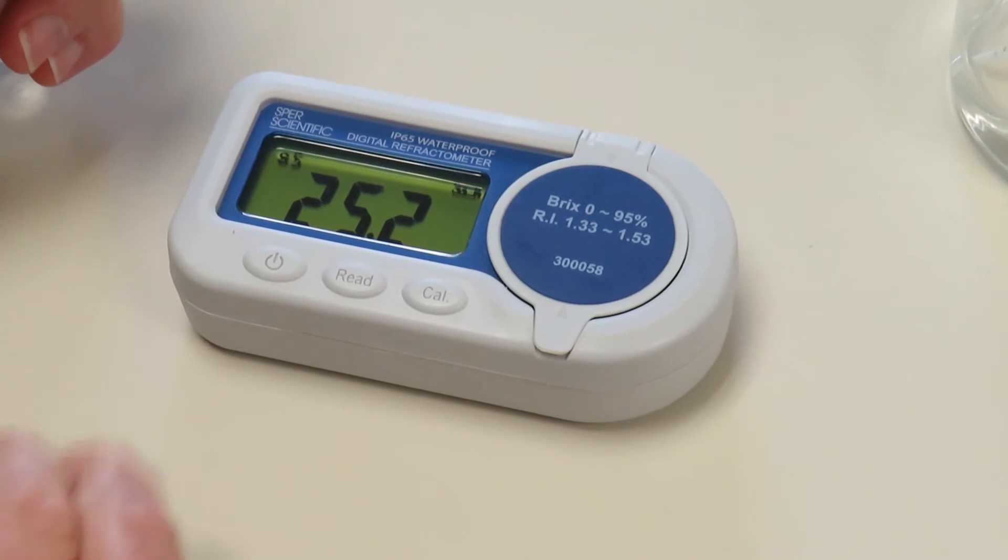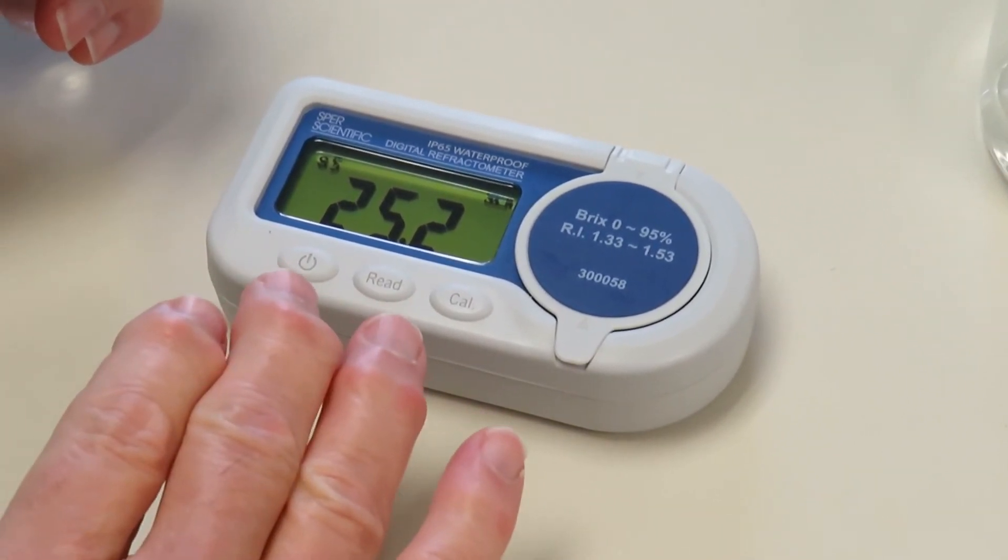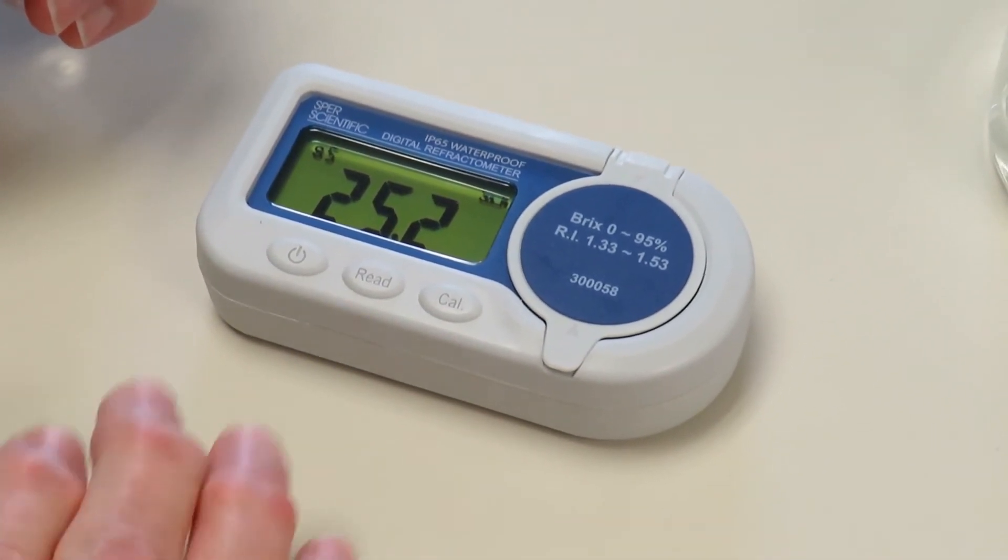And this is a 25.2 BRIX reading. In other words, there is 25.2% sugar in this solution. And that's it.